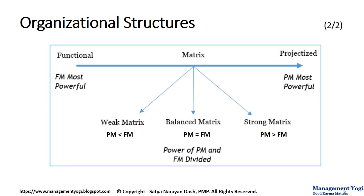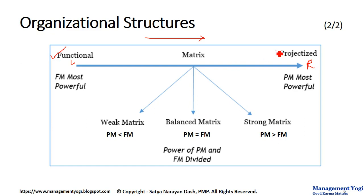So we talked about three types of organizational structure: functional, matrix, and projectized. Here, I have an arrow moving from left to right. On the left-hand side of the spectrum we have functional organization, on the right-hand side we have projectized organization, and in the middle we have matrix organization.